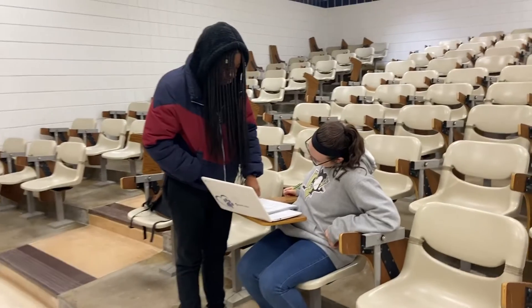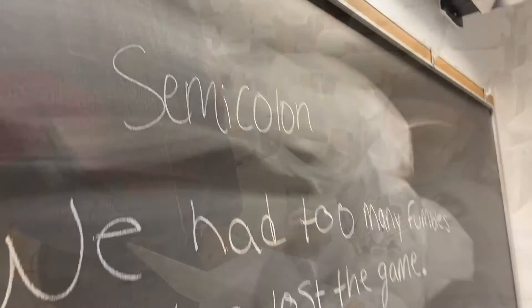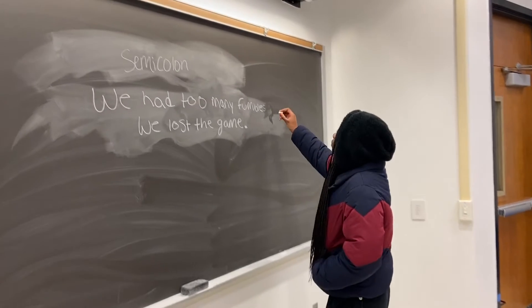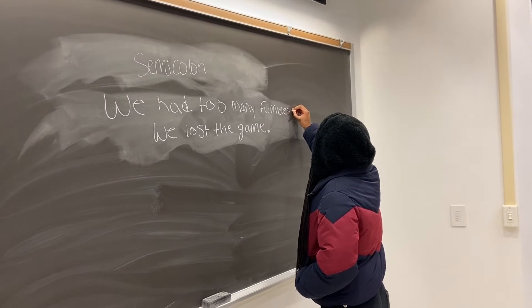Semicolons join two complete sentences that are loosely related. Where should the semicolon go? That's right, right between fumbles and we.